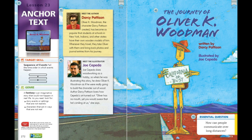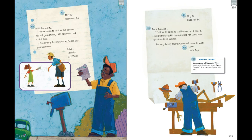Now that you have read the story, we're going to take a few minutes and think about what you read and think through the text. I want to encourage you to please pause the video after each question and discuss your ideas with your learning adult at home. We're going to start with the first text pages. Where do Tamika and Uncle Ray live and how do you know this? Analyze the text — sequence of events: who wrote the first letter, Uncle Ray or Tamika, and how can you figure this out?